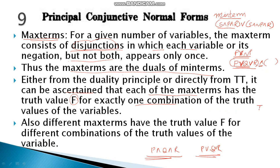Either from the duality principle or directly from the truth table, it can be asserted that each max term has the truth value false for exactly one combination of the truth values of the variables. In min terms, we considered all min terms where the outcome is true, whereas here in max terms, we consider all max terms where the output is false.